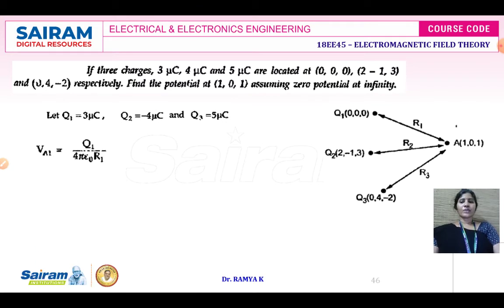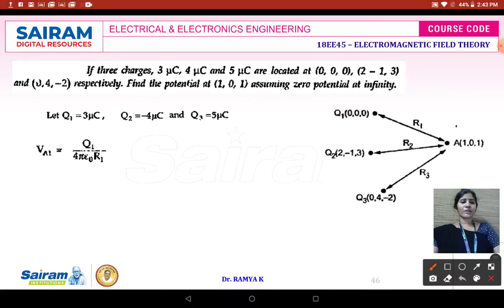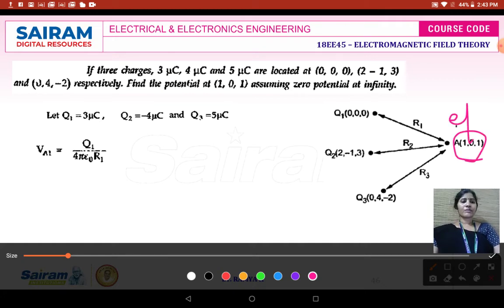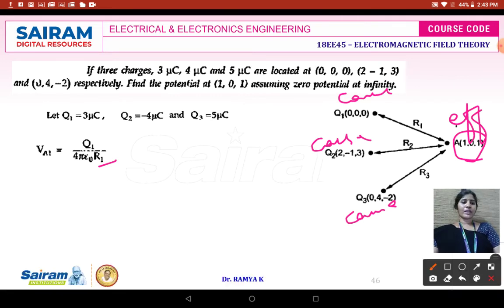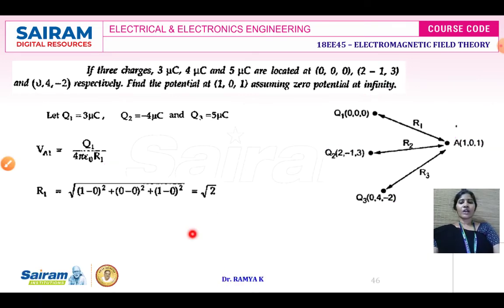To find VP1: R1 is the distance between Q1 at (0,0,0) and P at (1,0,1), identified as effect-minus-cause distance. We get R1 = √2. Substituting Q1 = 3 microcoulombs and R1 = √2 into Q1 / (4πε·R1), we obtain VA1 = 19.0658 kV.